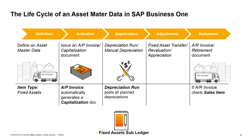The first step is to set up a Fixed Asset in the Fixed Assets Master Data window. This window allows you to define and manage all Fixed Assets item types. In our example, we will set up a Fixed Asset record for a new truck that OEC Computers purchased at the beginning of the fiscal year. An Asset Master Data record is activated when the user purchases a Fixed Asset using an AP invoice. The AP invoice automatically generates a capitalization document, and the user can choose whether to generate it directly or automatically from the AP invoice.